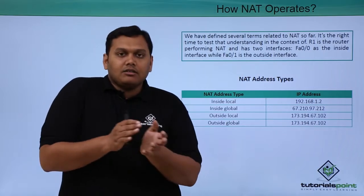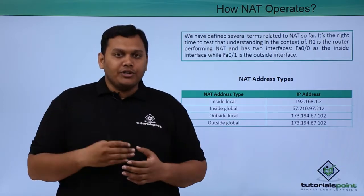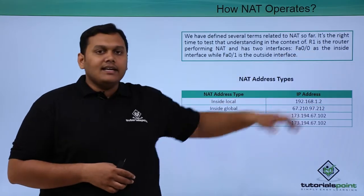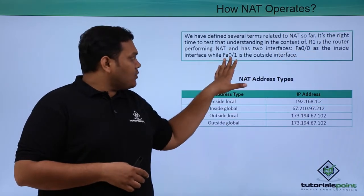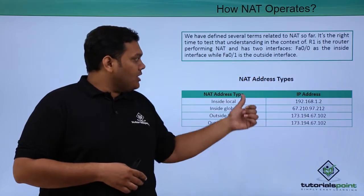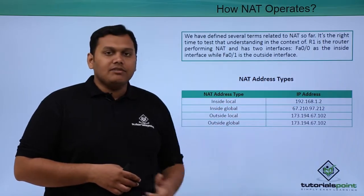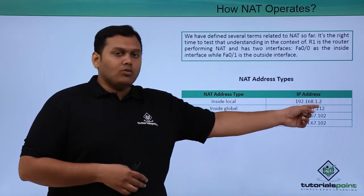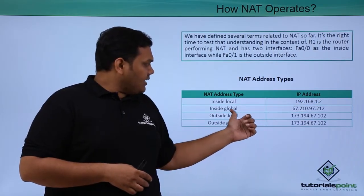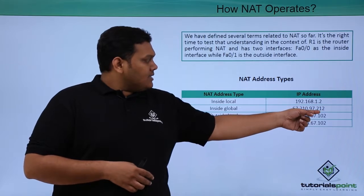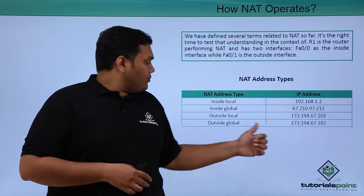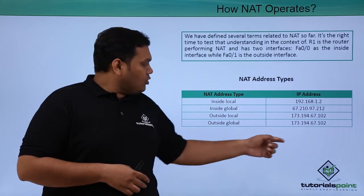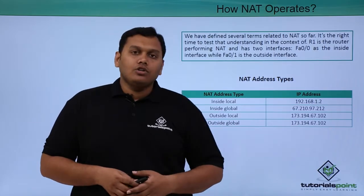fa0/0 is defined as the inside interface and fa0/1 is the outside interface. The NAT address types are: inside local is 192.168.1.2, inside global is 67.210.97.212, outside local is 173.194.67.102, and outside global is also 173.194.67.102.